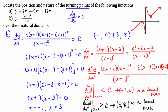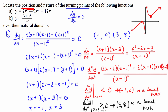When finding turning points: find where the first derivative equals 0 — differentiate, set equal to 0, solve for x. Then sub those x-values back into the original equation to find the corresponding y-values. Next, use the second derivative test to determine concavity at those points. If the second derivative is greater than 0, the function is concave up — local minimum. If it's less than 0, the function is concave down — local maximum. The coordinate gives you the position; the concavity tells you the nature.